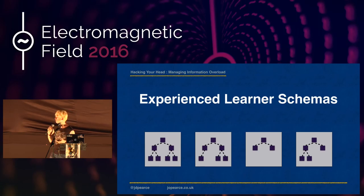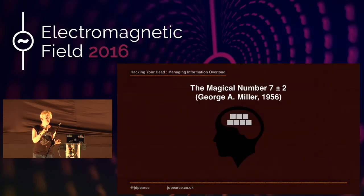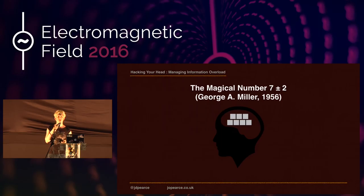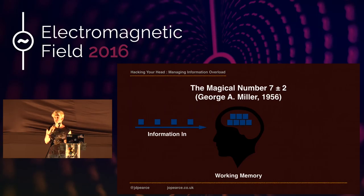There are limits to our ability to learn. Back in 1956, cognitive psychologist George A. Miller wrote a paper highlighting these limits on our ability to process information. You may have come across Miller's Law — the magical number 7 plus or minus 2. His paper suggested there's a definable limit on the amount of information we can usefully process at any one time, and when that limit is exceeded, information overload leads to our learning becoming inefficient.